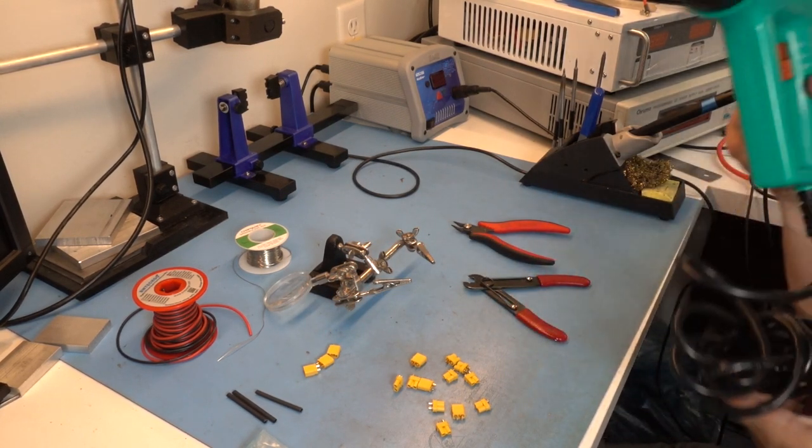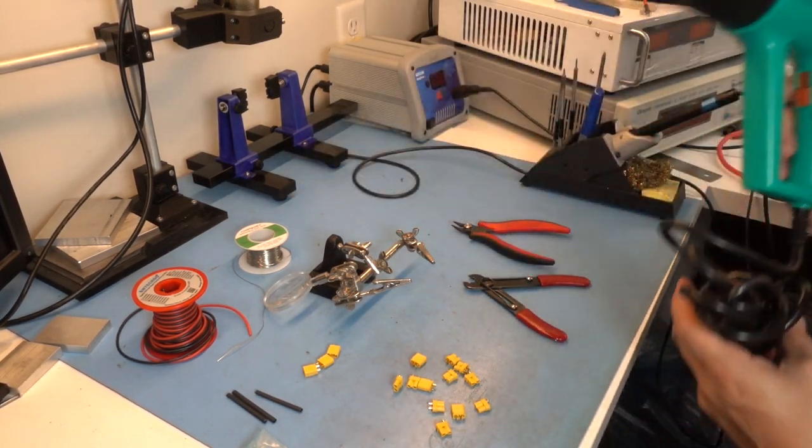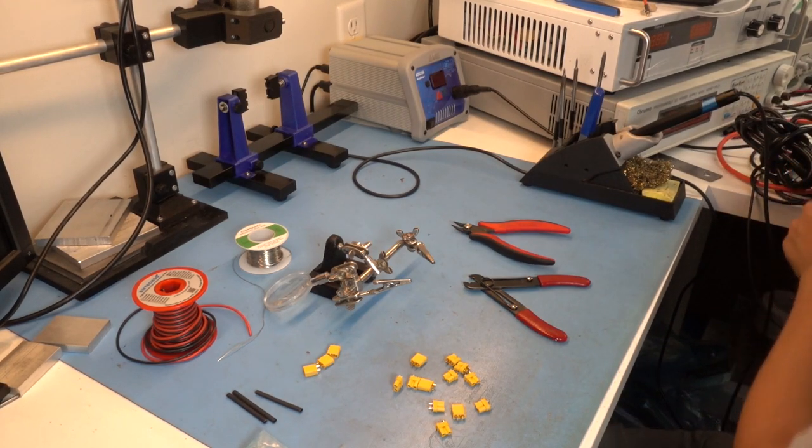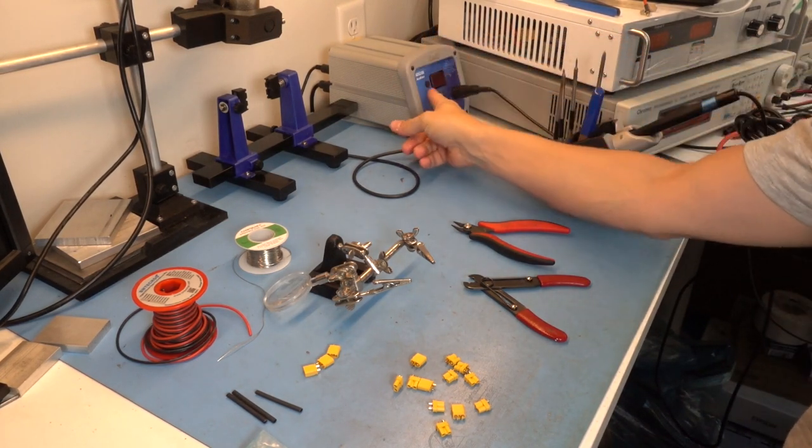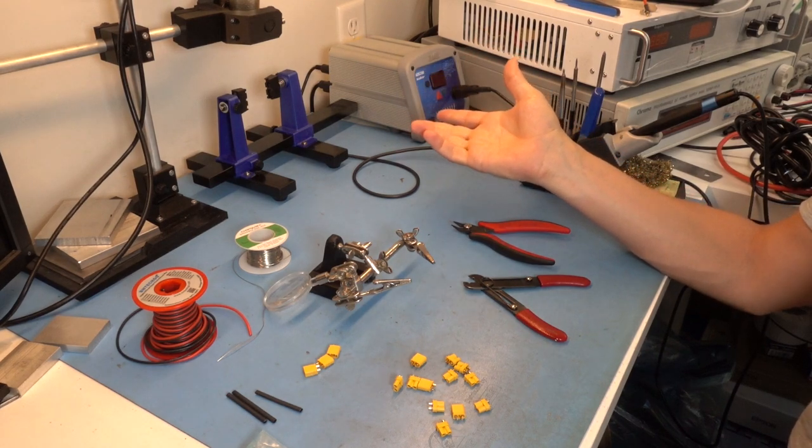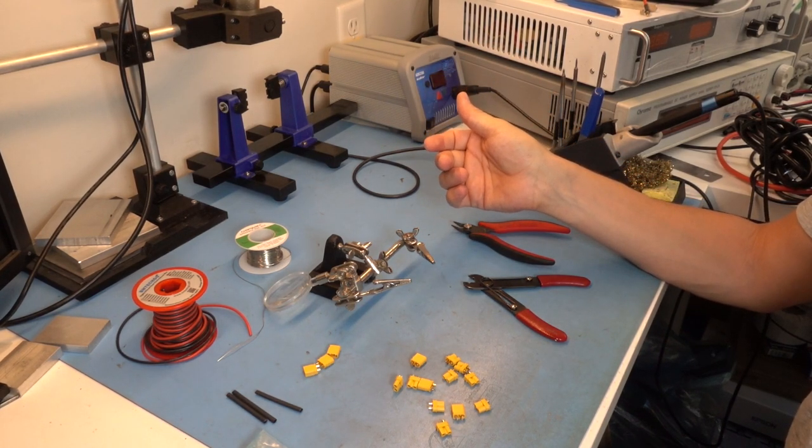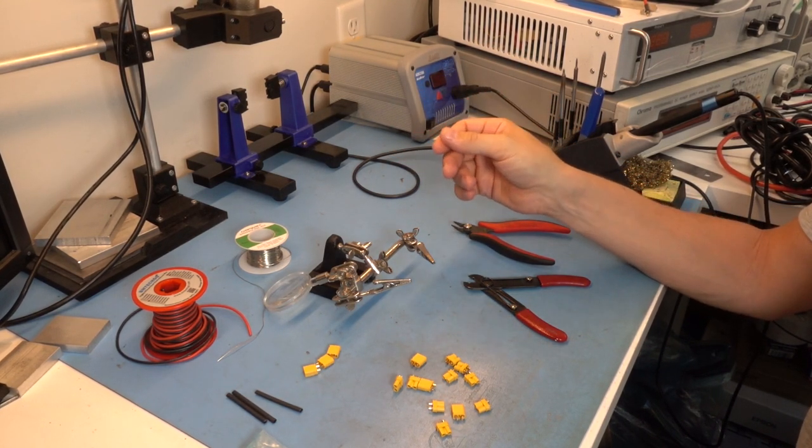A hot air gun to activate the heat shrink tubing, and lastly, a soldering iron. I have a Pace ADS200. Any temperature-controlled soldering iron with reasonable power should work all right.